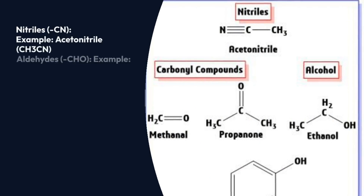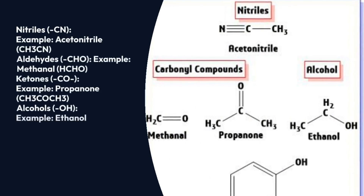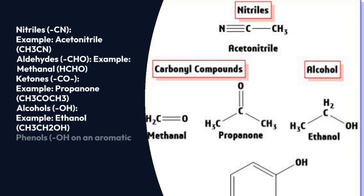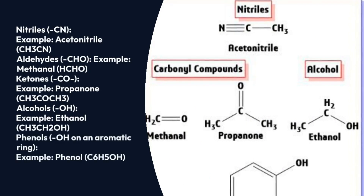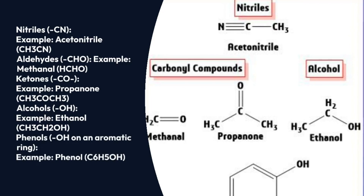The next category includes nitriles, aldehydes, ketones, alcohols, and phenols. For nitriles, the example is acetonitrile. Aldehydes and ketones come under carbonyl compounds. For aldehyde, the example is methanal — the suffix is -al. For ketone, the example is propanone.